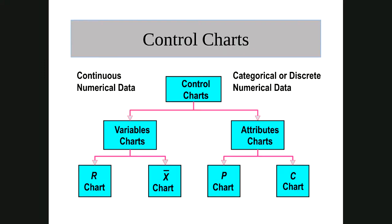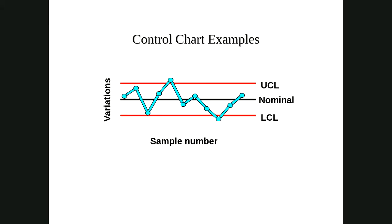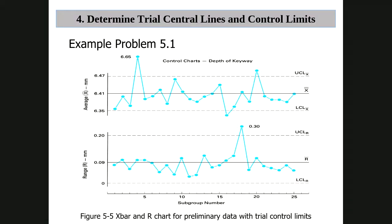Variable charts are classified into average charts and range charts. Attribute charts include p-type charts (proportion defective). When data points fall outside the control limits on a chart, those products are investigated. A trend moving toward the center line indicates active quality control and improving product consistency, while a diverging trend signals a manufacturing problem requiring corrective action.